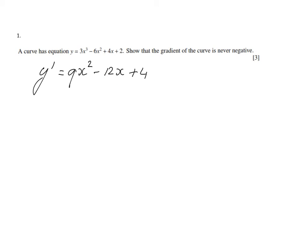Now I have to show that the derivative, the gradient function, is never negative or always positive. How can I show that? Well, I can factorize it because that's a perfect square. So the derivative is a perfect square, 3x minus 2 squared.